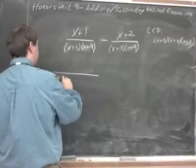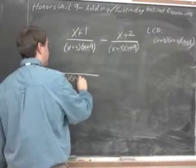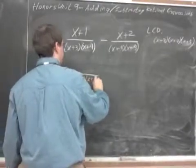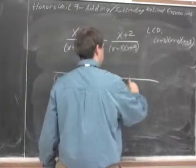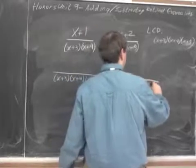So, x plus 3 times x plus 4 times x plus 5 minus something: x plus 3, x plus 4, x plus 5.